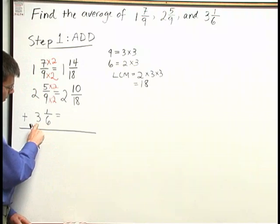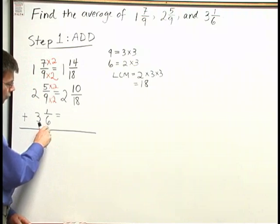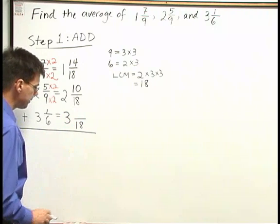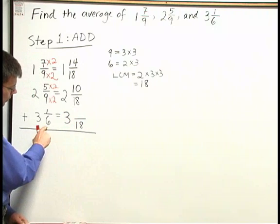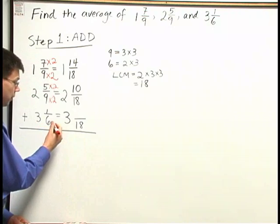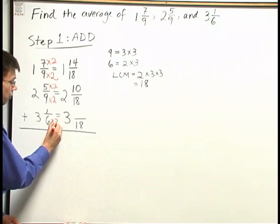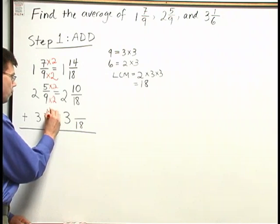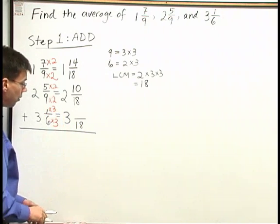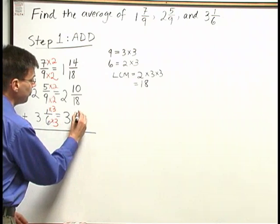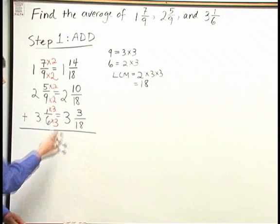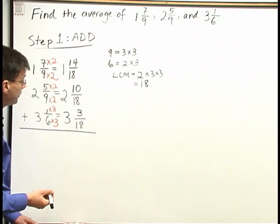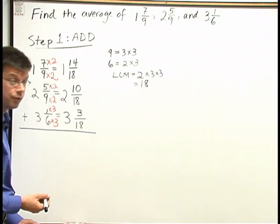Down below, for my third number, I have three and one sixth. That's three and so many eighteenths. Six, I need to multiply by three to get that denominator eighteen. So up above the one, I multiply by three. One times three is three. So now I'm ready to add my three numbers together, since I have a common denominator for the fractions.